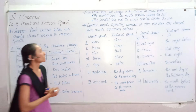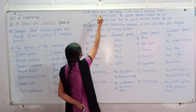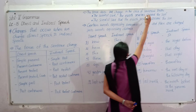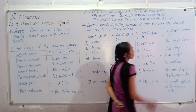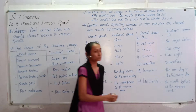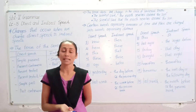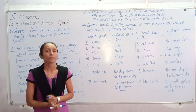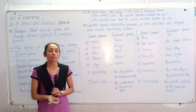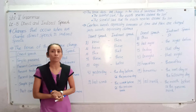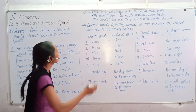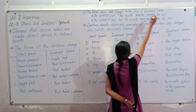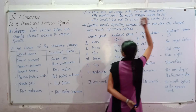Now, next, the tense does not change in the case of universal truth. This sentence means universal truth is expressed. Universal truth is explained in the case of universal truth.